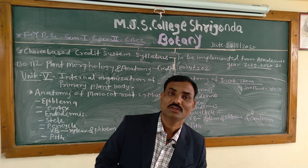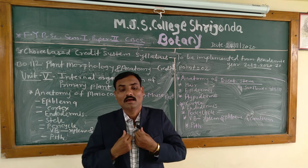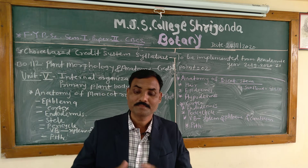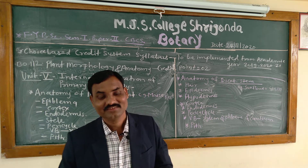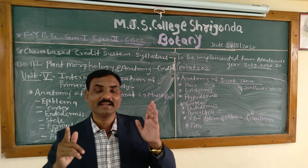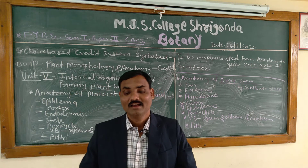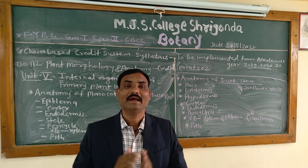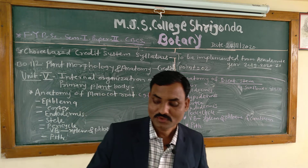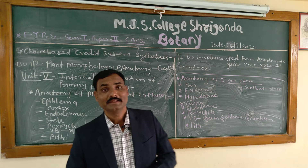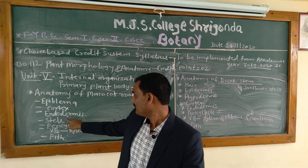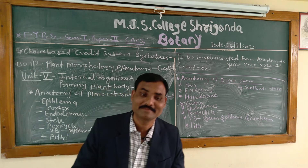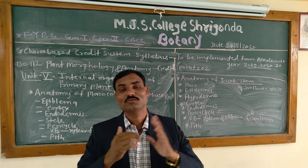Next to the endodermis is the stele, which has radiating ribs and pith is absent. It is an actinostele — a protostele — and the stele consists of pericycle, vascular bundles, and pith. The pericycle is a single layer, partly made of sclerenchymatous cells, and is located near the protoxylem in patches.